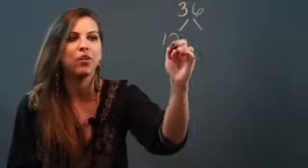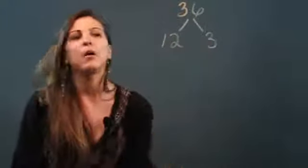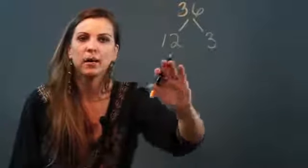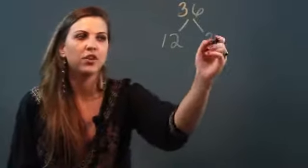Now what you want to do is as you're breaking down your number into its factors, if you see a prime factor like 3, you're going to go ahead and circle it because you're done breaking it down.